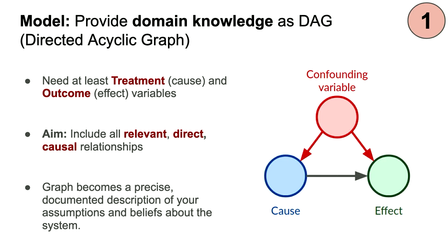DoWhy wants you to provide your domain knowledge about the system as a directed acyclic graph. 'Directed' means there are arrows between the variables — the variables are essentially just the columns in your data file. 'Acyclic' means that there are no loops. Those are the only constraints. We need the graph to include at least the treatment — the cause that we want to vary — and the outcome that we want to understand the effect on. The aim is to include in that graph all of the relevant direct causal relationships. You only want to include a relationship where it's a causal one, not just a correlation. There's some judgment to deciding which variables and interactions to include.